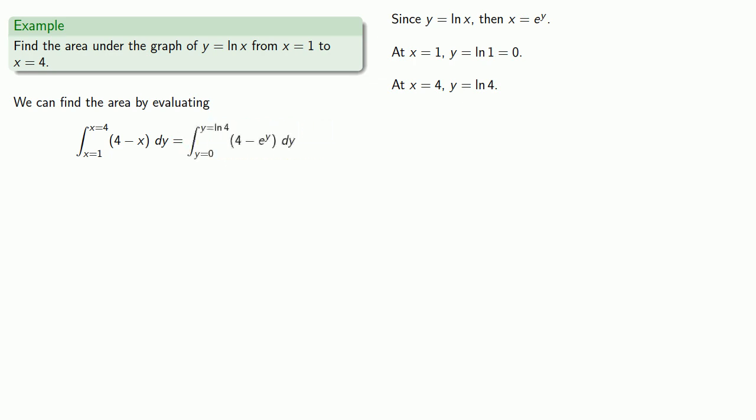And that's good, because this, 4 minus e to the y, is a function I can anti-differentiate easily. So I'll find the antiderivative, and I'll evaluate the function at log 4, and subtract the function at 0. And after all the dust settles, get my answer for the value of the integral, which is also the area of the region.